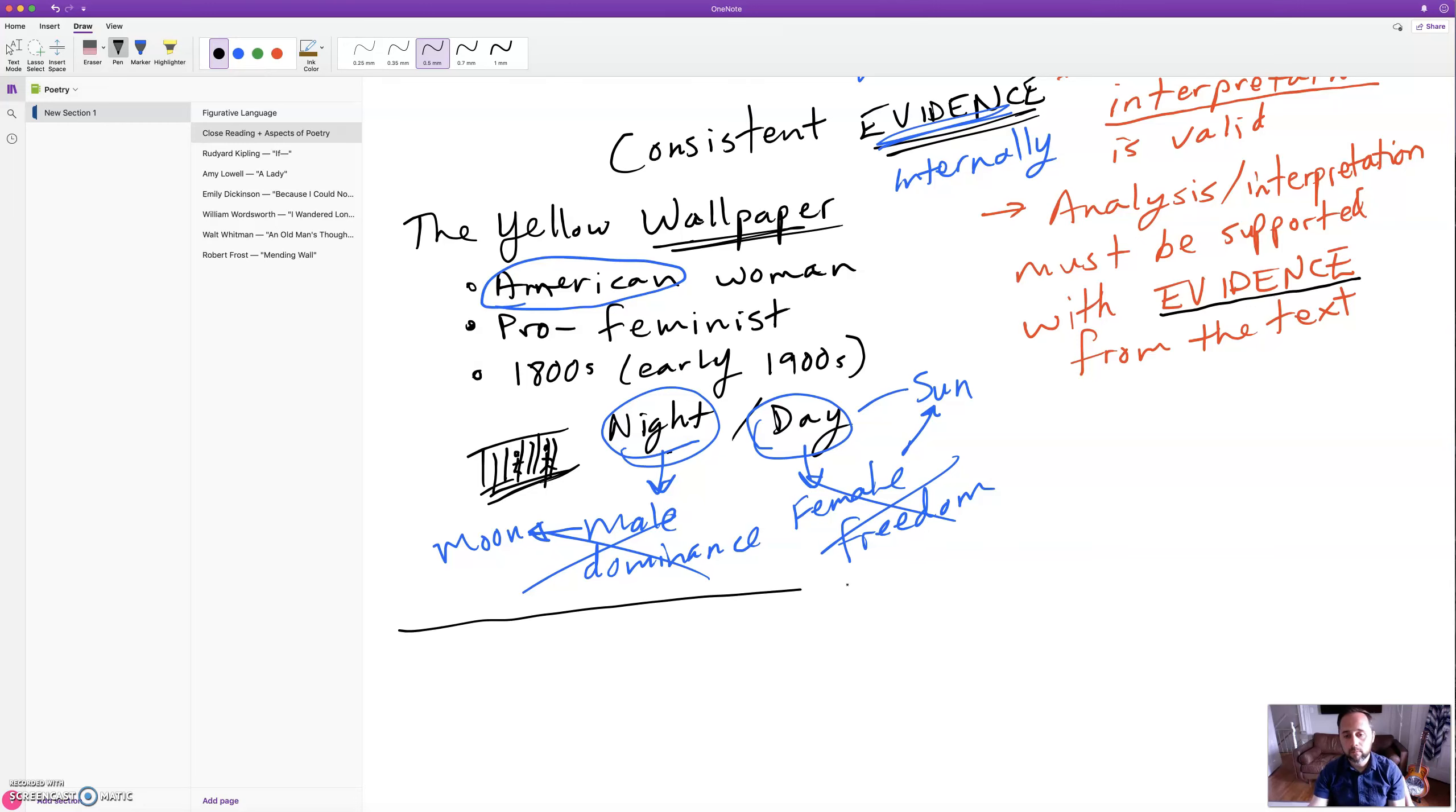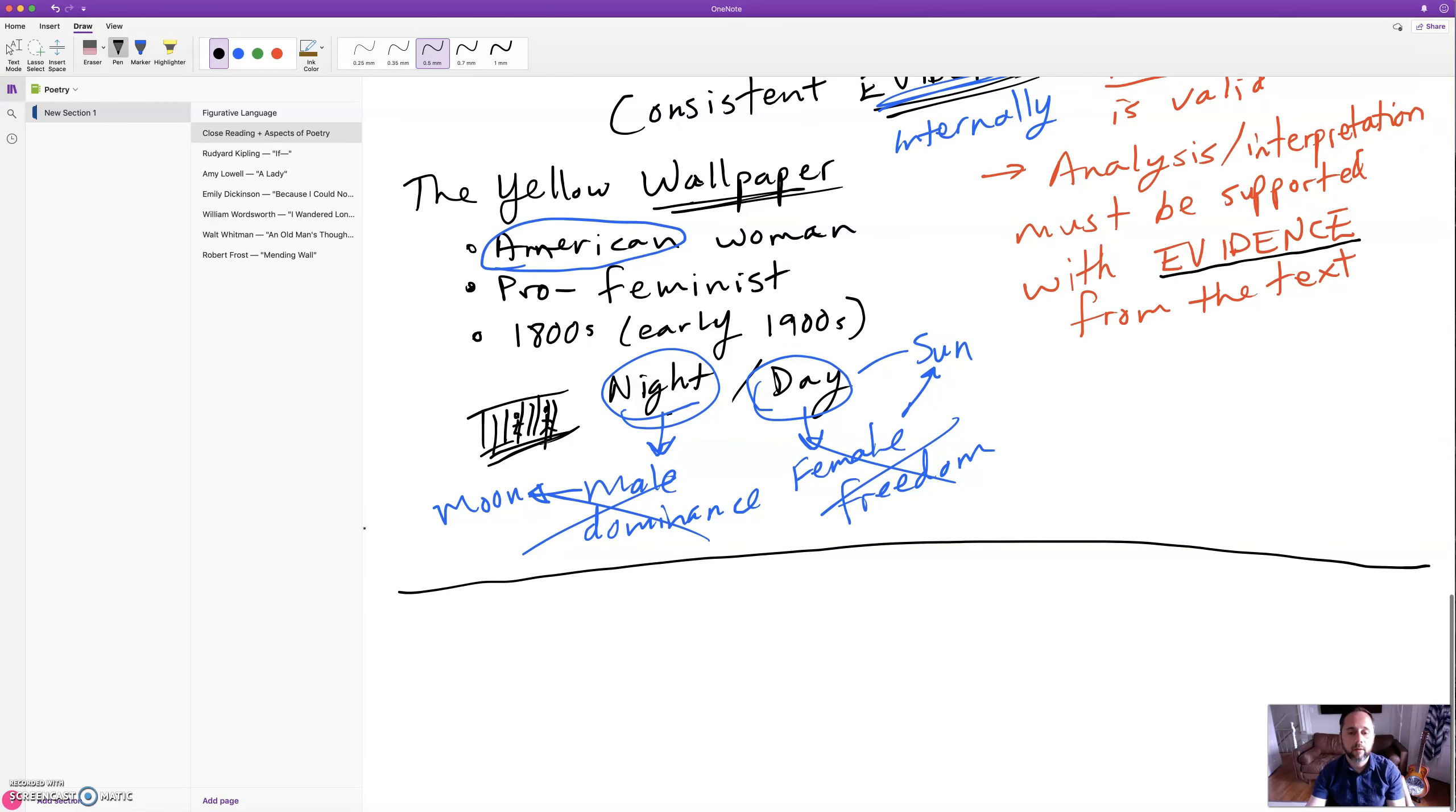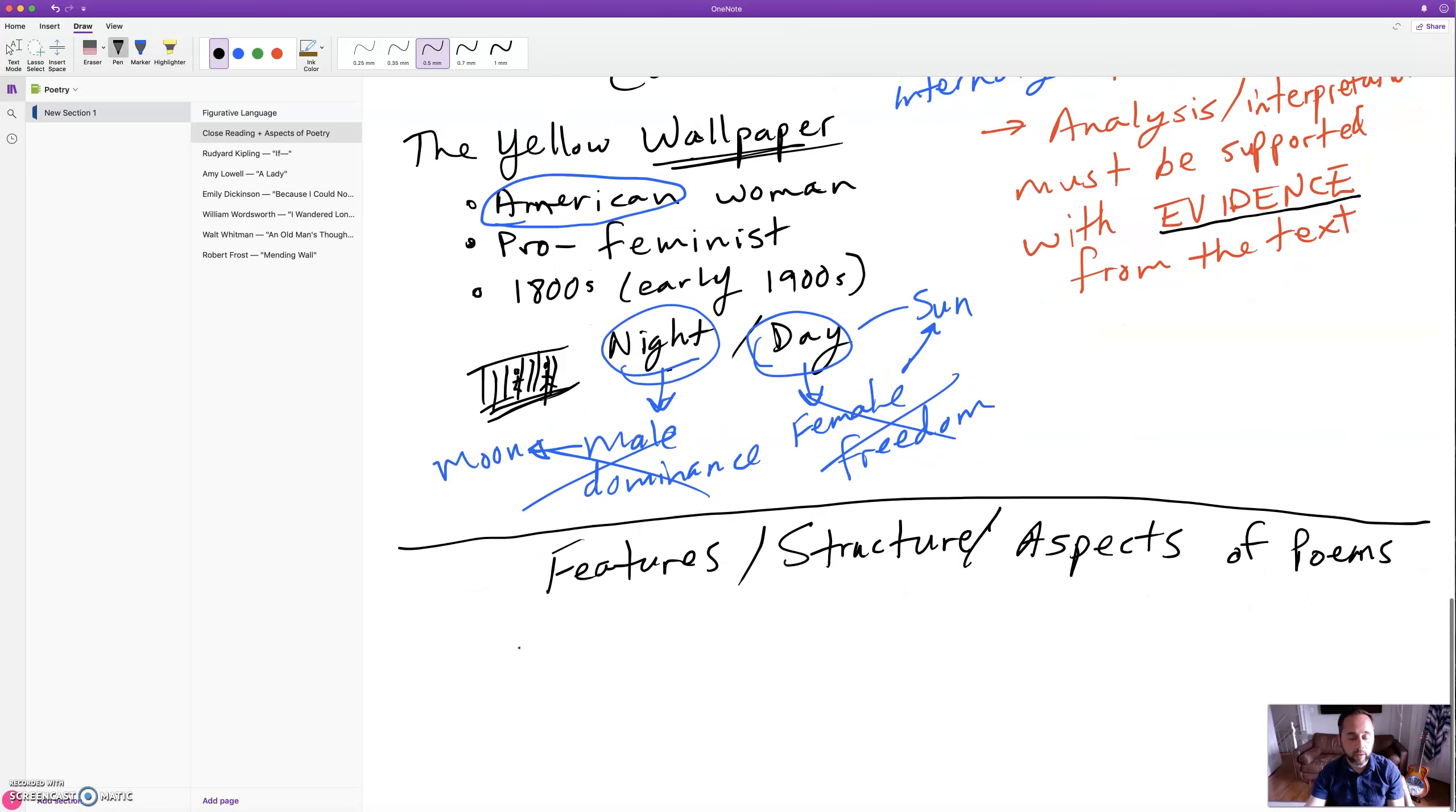That's close reading in a nutshell. Next, I just want to point out some features of poems and ways to talk about structures and the aspects of poems. Because there's some different terminology that we need to use when we're talking about poetry. A poem internally has a speaker.